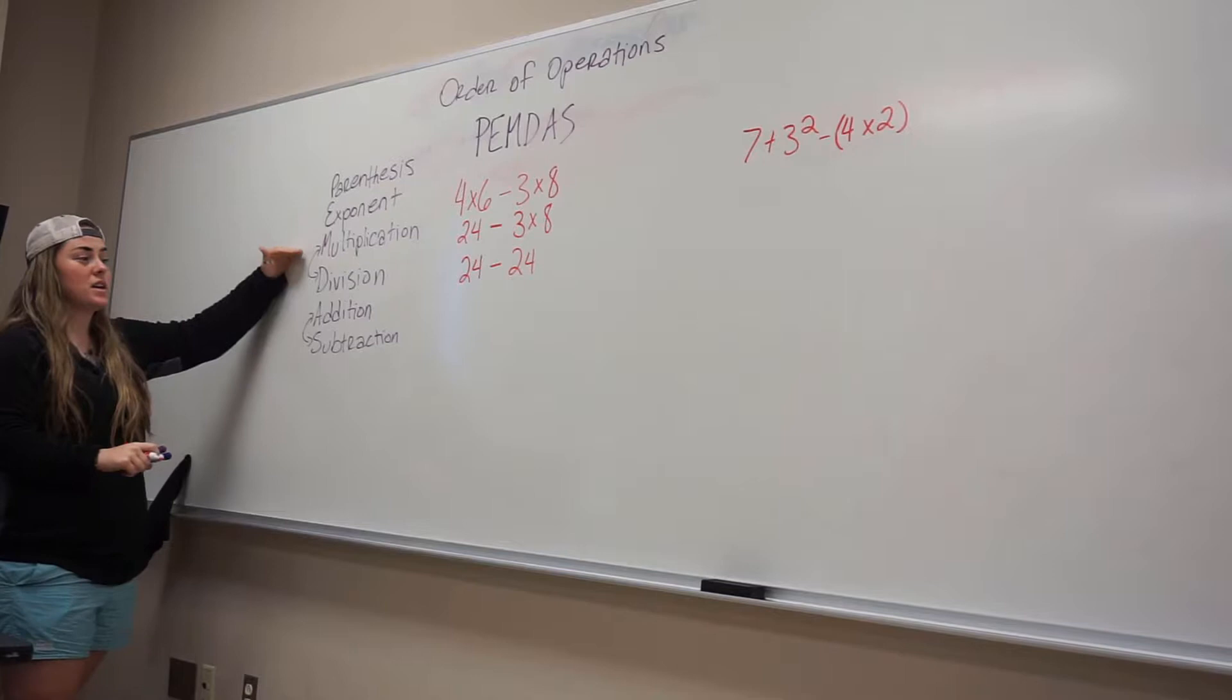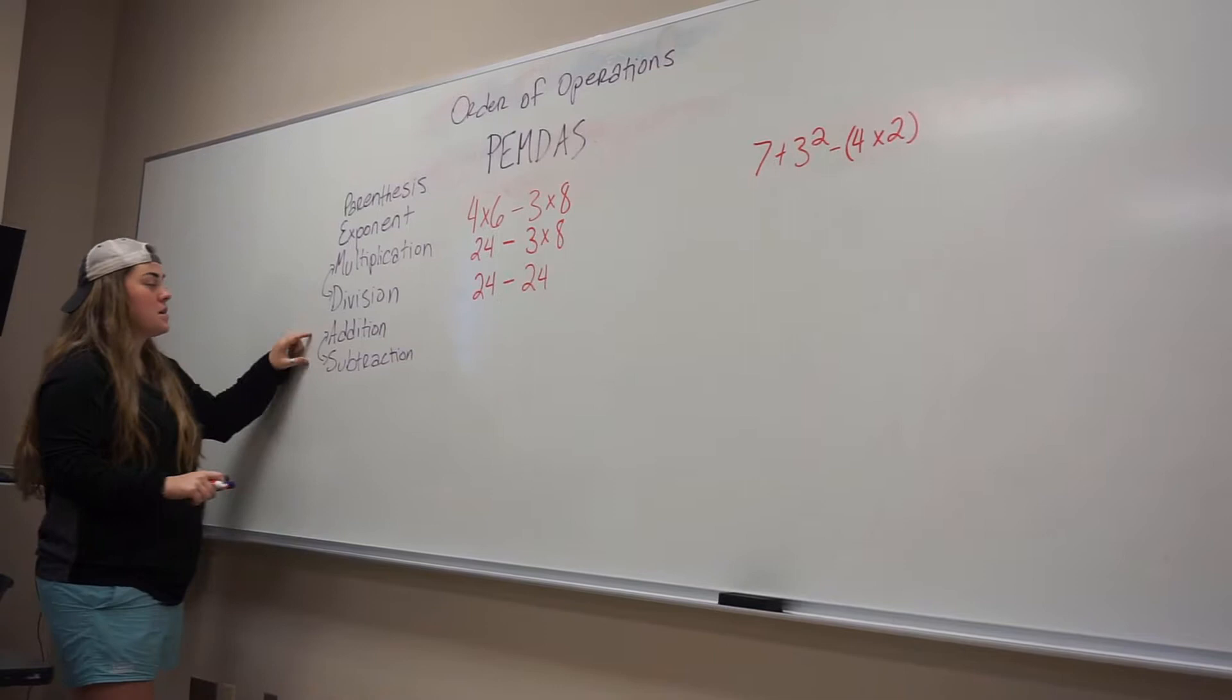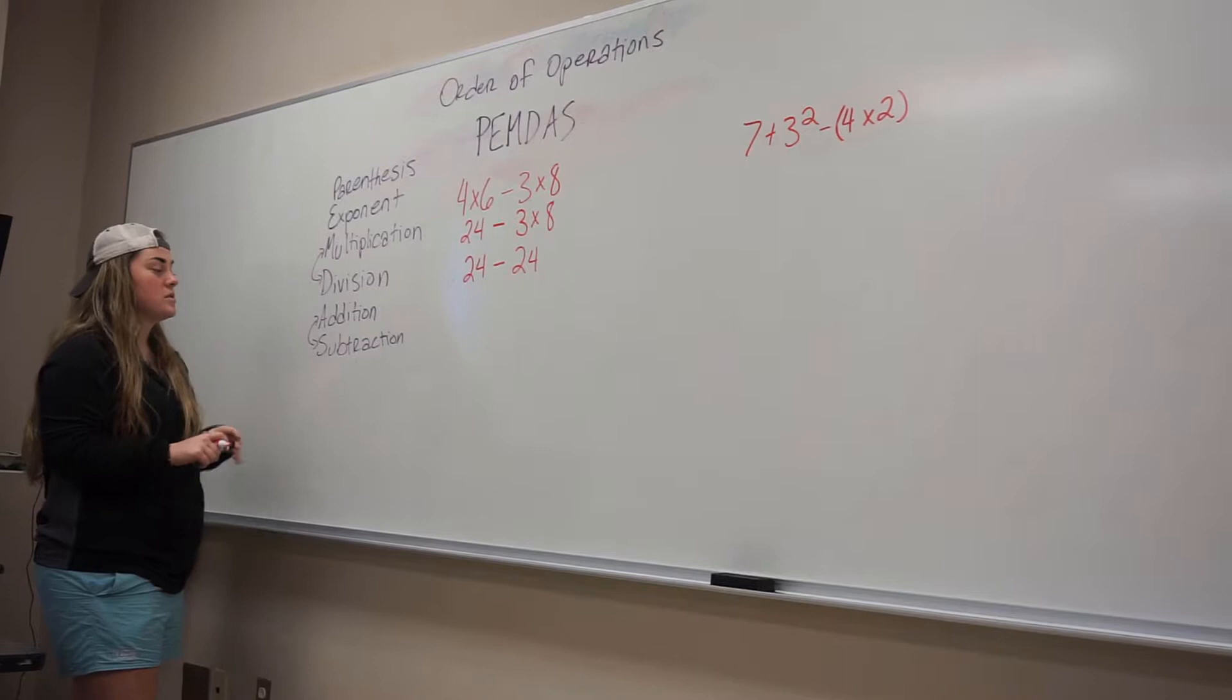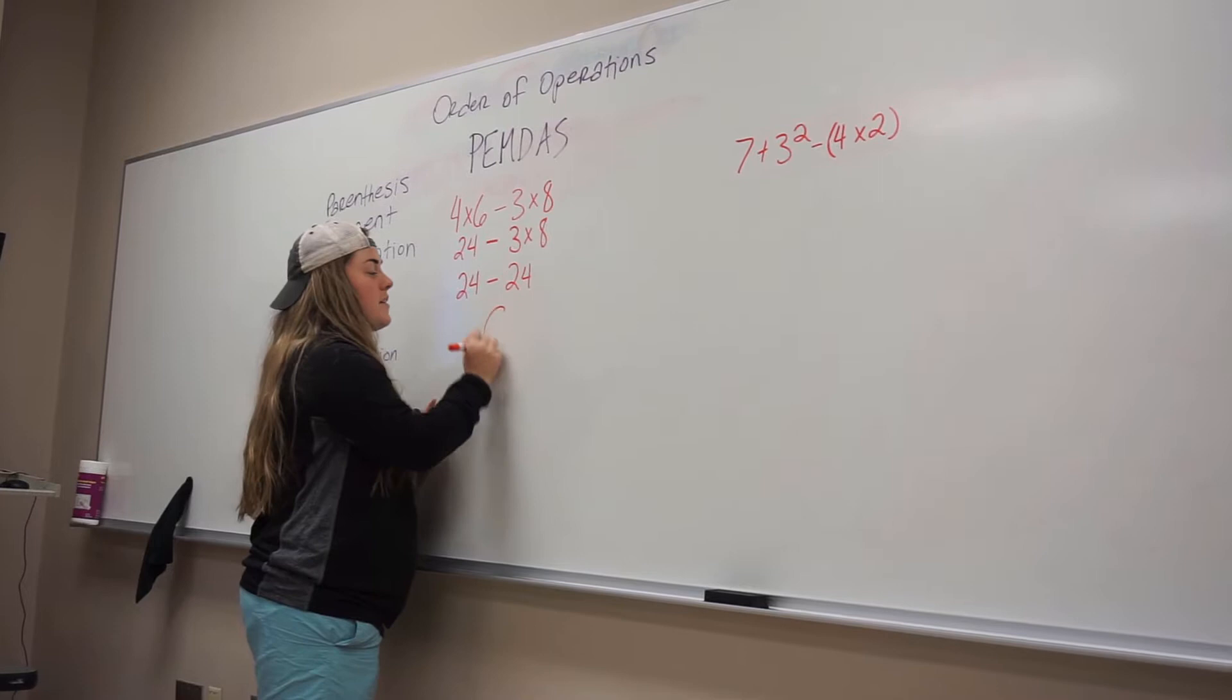Then we're going to start again from parentheses. There's still no parentheses, exponent, no exponent, multiplication, no more multiplication, division, no division. The same thing with addition and subtraction with the flipping. If addition comes first on the left, we do addition. Subtraction's first like it is here, so we do subtraction. What do we know? 24 minus 24 is zero.